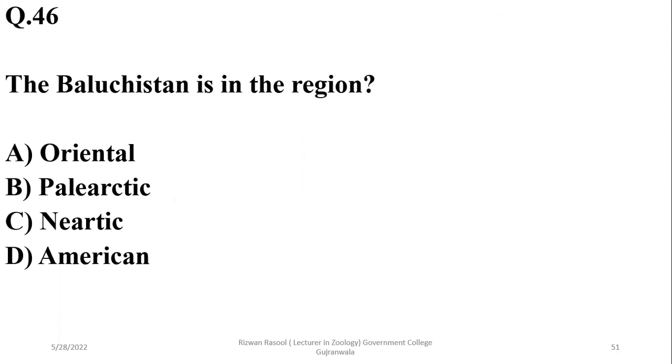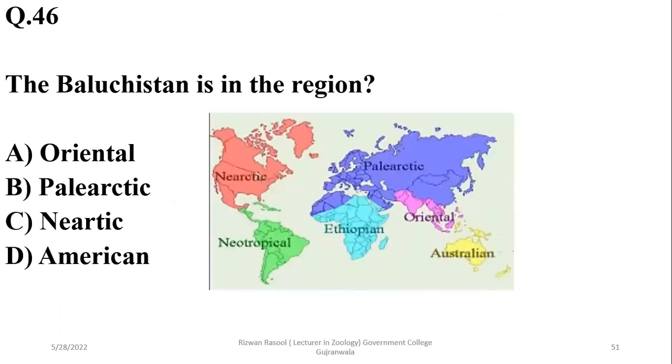The zoological region — Balochistan is located in the Palearctic zone. So the right option is beta.